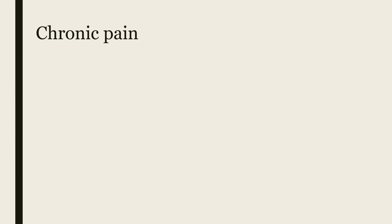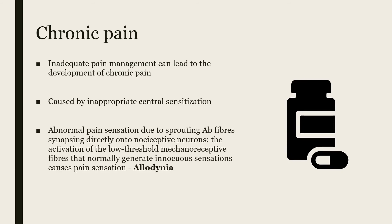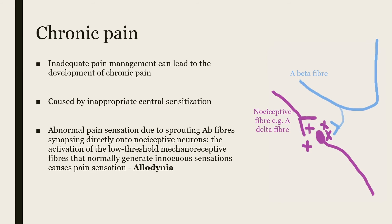Chronic pain is closely related to central sensitization. Inadequate pain management can lead to the development of chronic pain, and it is caused by inappropriate central sensitization. You may also get abnormal pain sensation due to malformations in the dorsal horn — for example, sprouting of A-beta fibers directly onto second-order nociceptive neurons. The activation of low threshold mechanoreceptors causing A-beta fiber stimulation can lead to activation of second-order nociceptive fibers, causing normally innocuous sensations to cause pain.